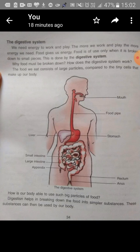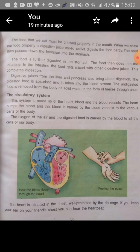Nutrition is taken by the body from the small intestine, then it passes to the large intestine before it is excreted. Similarly, the circulatory system explains how blood is transported to various parts of the body from the heart.